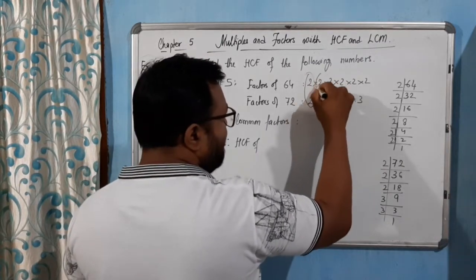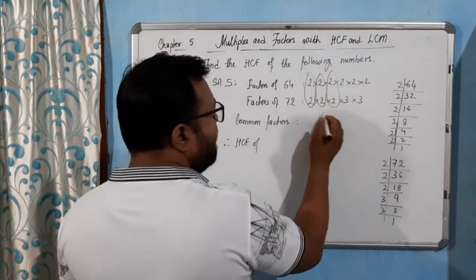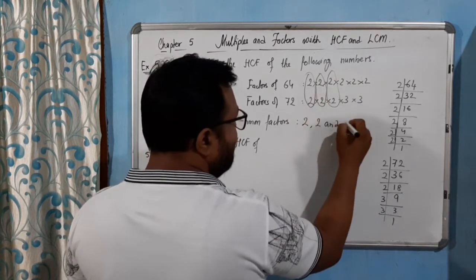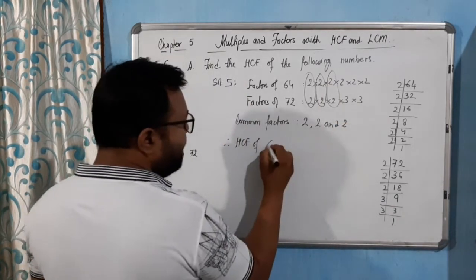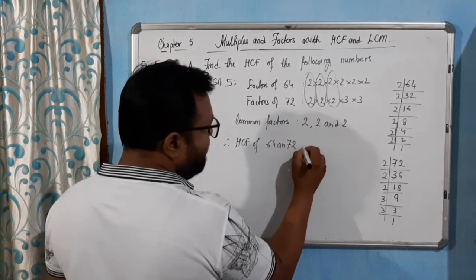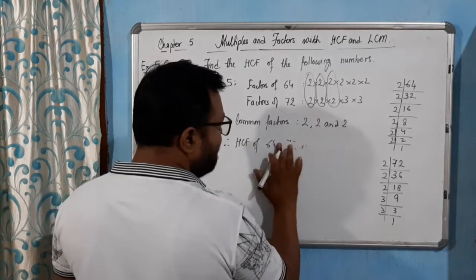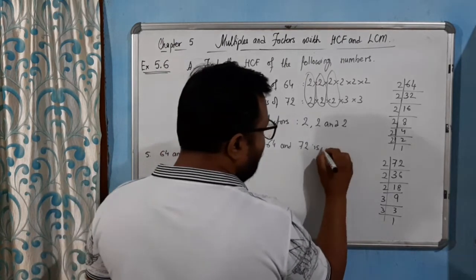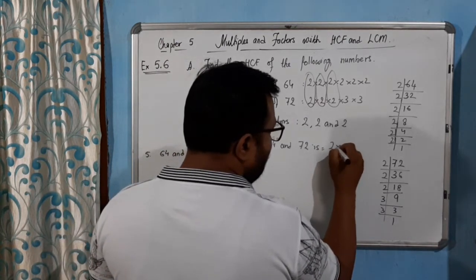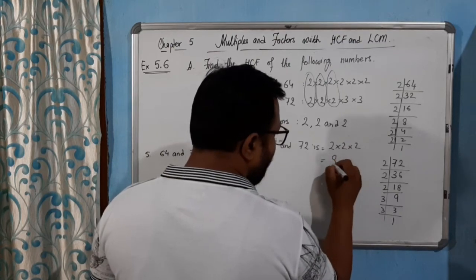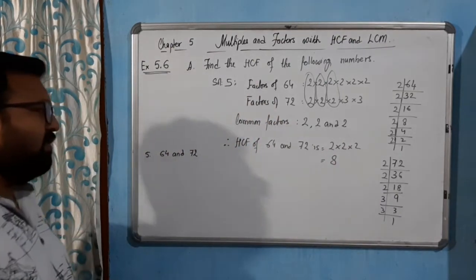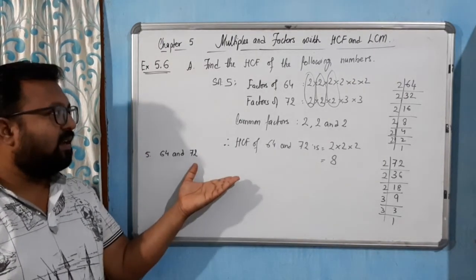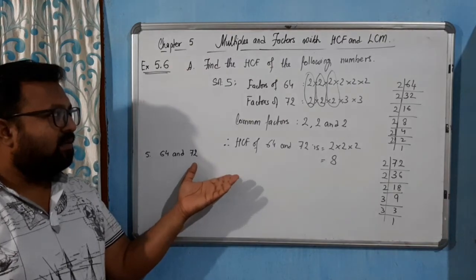Looking at the common factors of 64 and 72: three 2s are common to both. Therefore the HCF of 64 and 72 is 2 × 2 × 2 = 8. It's very simple. I hope you have understood this part. Thank you.